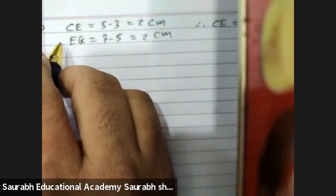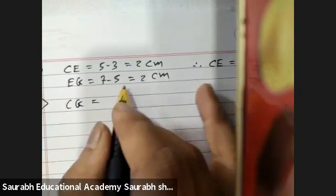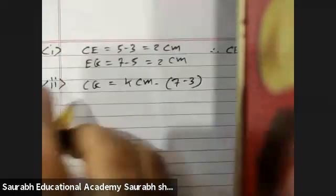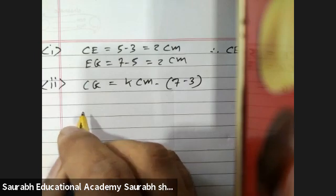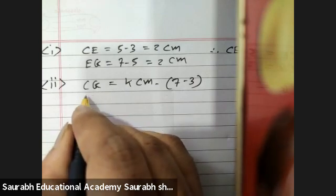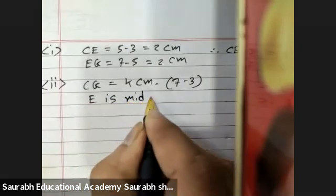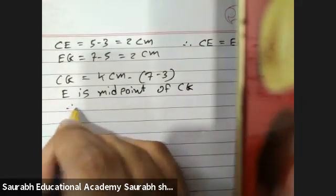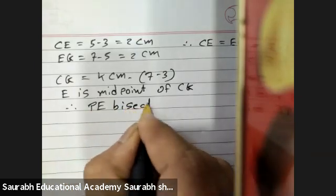Why it bisects? Let's write down exactly what it bisects from. Now I see the scale, from C to G is 4 centimeters, 7 minus 3, and E is a midpoint of CG. Therefore, PE bisects CG.